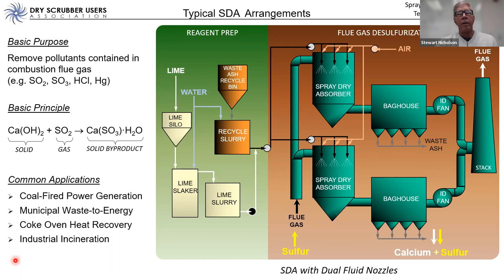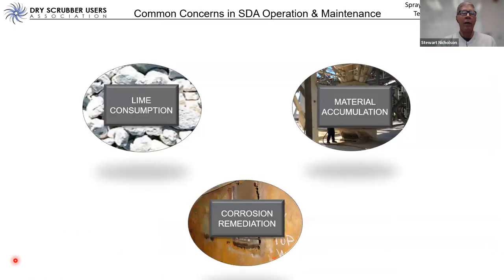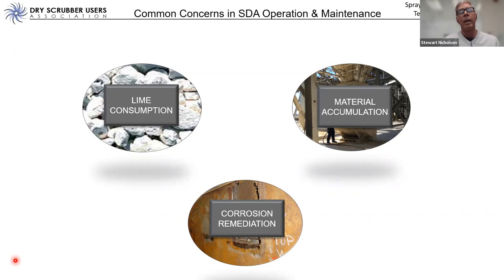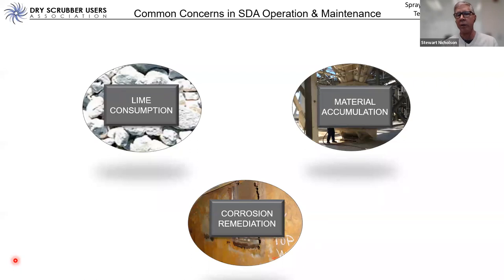Now let's talk about the three things that dry scrubber users are concerned with in the operation, maintenance, and ownership of dry scrubbers. They are: lime consumption, which is an operating cost; material accumulation, which is a common problem in SDAs; and corrosion, another common problem in SDAs. We're thinking about the long-term costs related to lime consumption, material accumulation, and corrosion remediation.